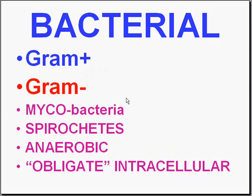The types of bacterial diseases we'll focus on are generally classified, although not totally logically due to some overlap, as gram positives — usually cocci — and gram negatives — usually bacilli. But as you know, there's also a handful of gram positive rods.